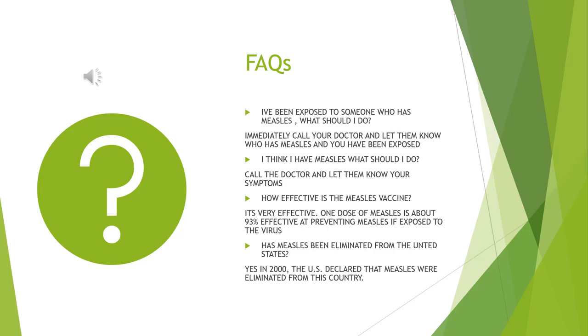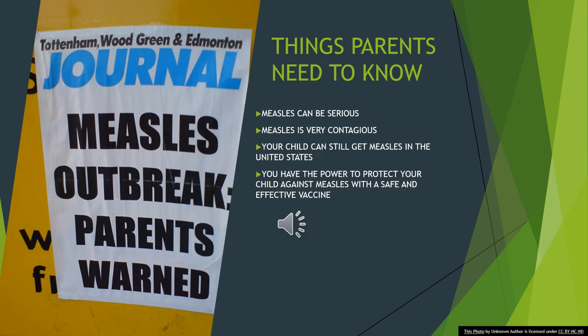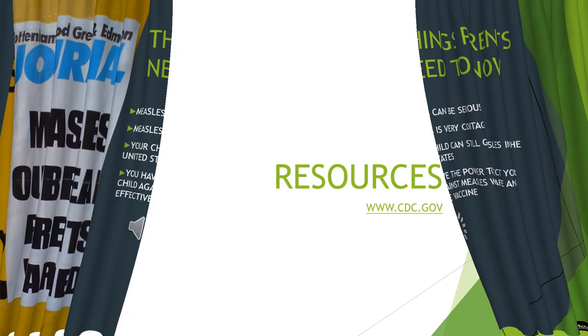How effective is the measles vaccine? It's very effective. One dose of measles vaccine is about 93% effective at preventing measles if exposed to the virus. Has measles been eliminated from the United States? Yes. In the year 2000, the U.S. declared that measles were eliminated from this country.